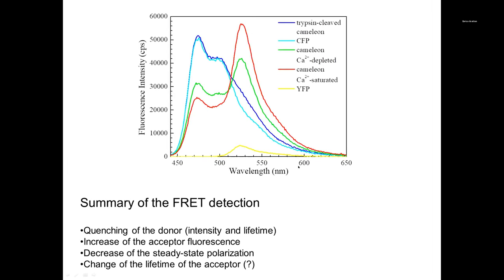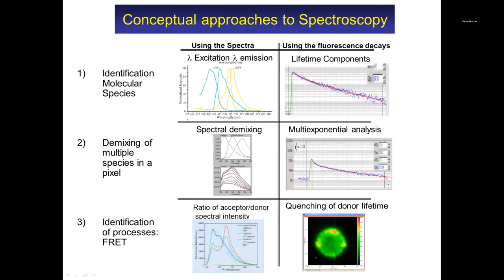This is an example from a paper by Roger Tsien using the chameleon protein. The chameleon protein shows the donor decreasing as the acceptor concentration is increasing — and this is the ratiometric approach that Dave was talking about.